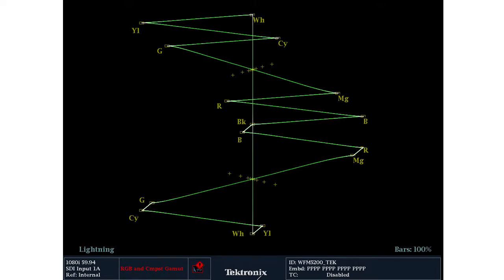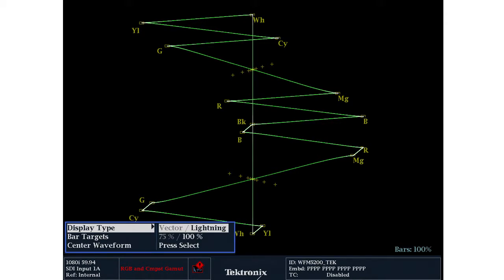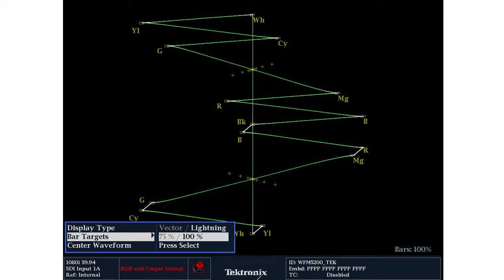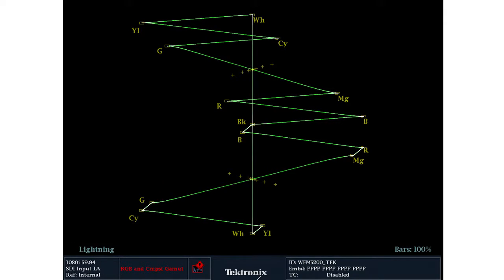When a color bar signal is applied, either at 75% or 100%, the signal should fall within the boxes, similar to a vector display. Make sure to select the appropriate vector graticules for 75% or 100% within the menu.